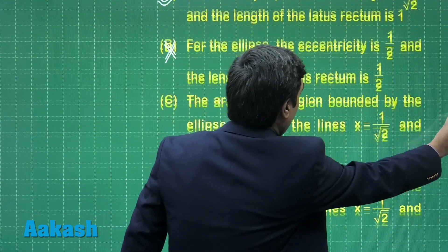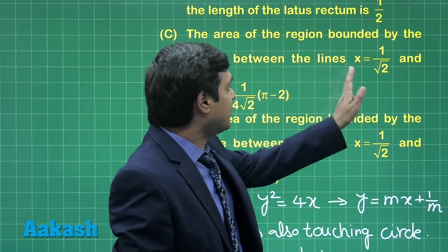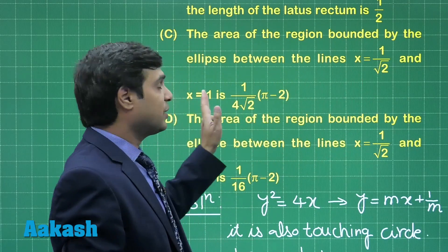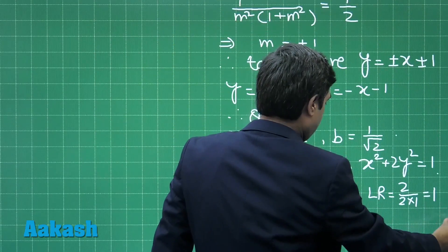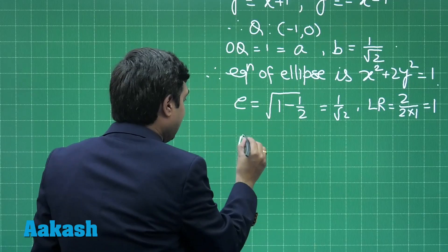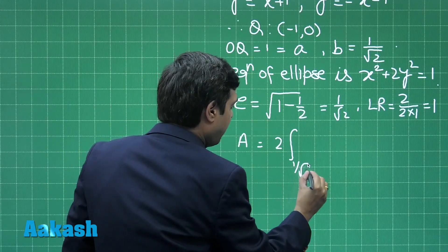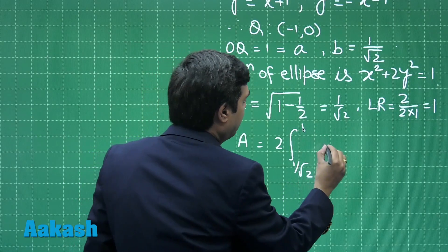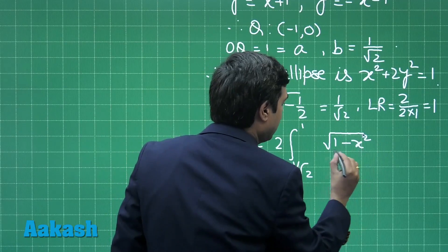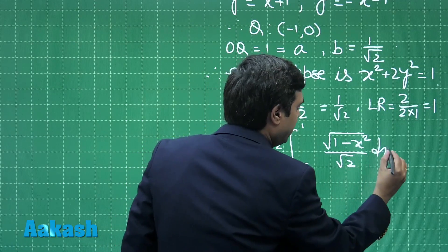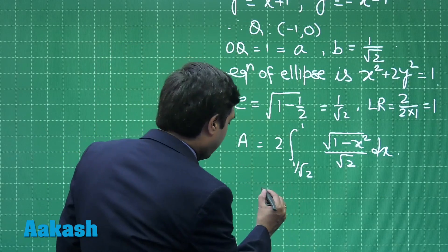Third and fourth options are talking about area of the region bounded by the ellipse between the lines x = 1/√2 to x = 1. So clearly we require area as twice of integral from 1/√2 to 1 of √(1 - x²)/√2 dx.